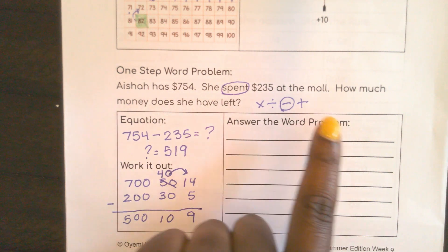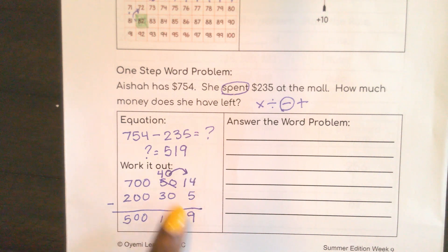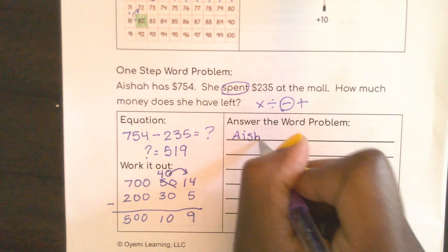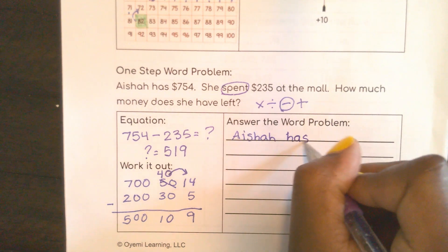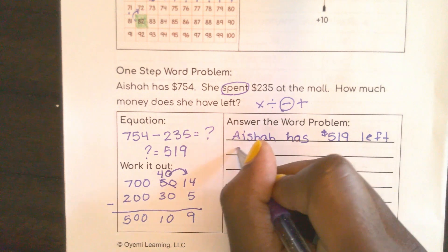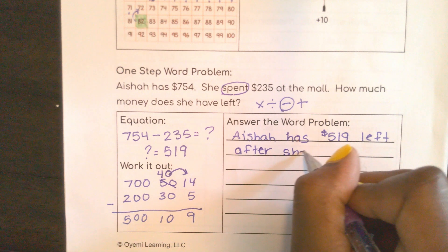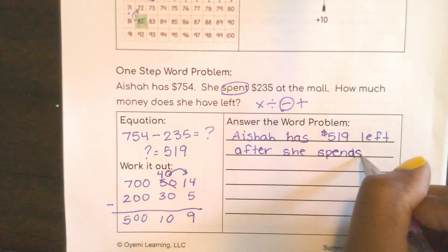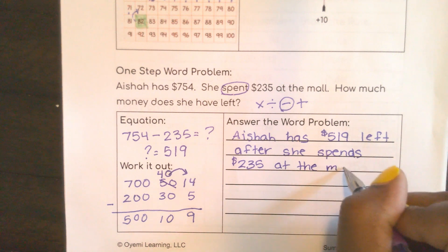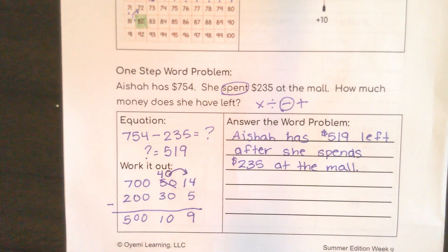So now I'm going to answer the word problem, because over here we were talking about cookies and cake just to help us remember how to subtract — but now I have to actually answer this problem: how much money does Aisha have left? Aisha has $519 left after she spends $235 at the mall. $235 — very good work. We thought that through.